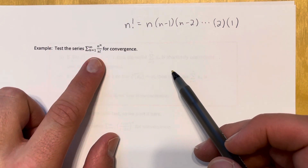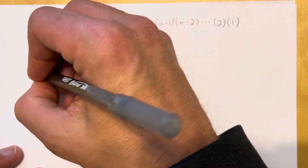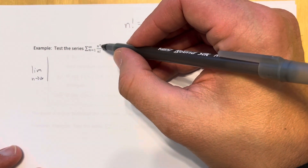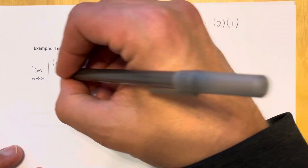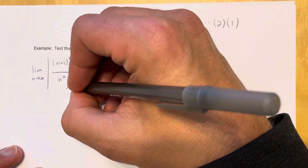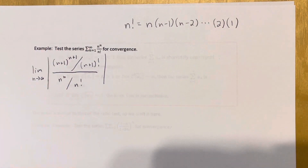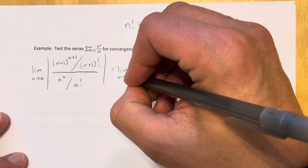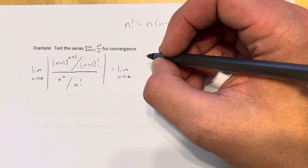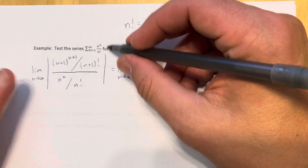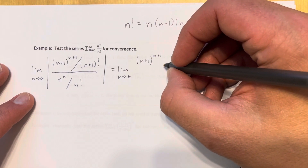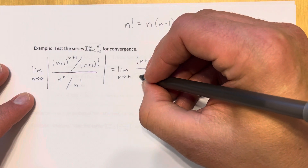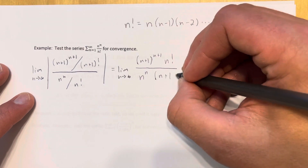Let's test the series with general term n^n / n! for convergence using the ratio test. I substitute n+1 for all the n's: the (n+1)th term is (n+1)^{n+1} / (n+1)!. The nth term is n^n / n!. We form the quotient of (n+1)th term over nth term.